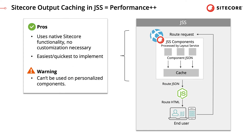To improve performance, the first thing to do is to make sure that Output Caching is enabled. This utilizes Sitecore's out-of-the-box HTML caching functionality to cache the layout service's JSON response, so it's quick to implement. The limitation of this strategy is that it can't be used on components that are personalized.